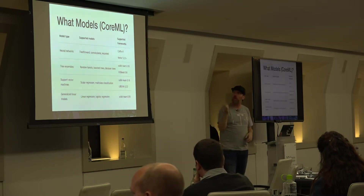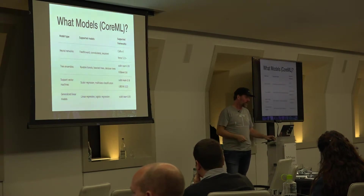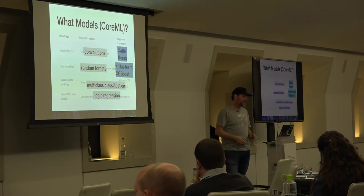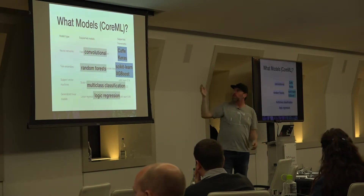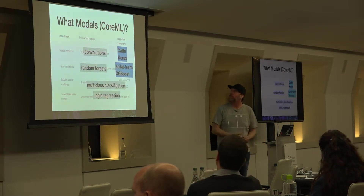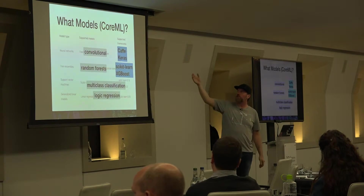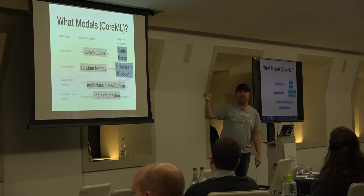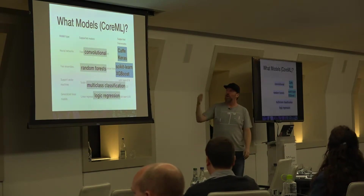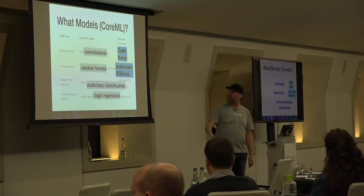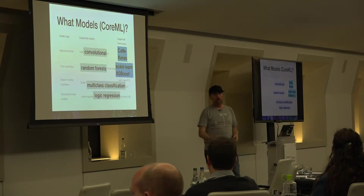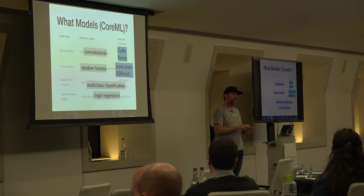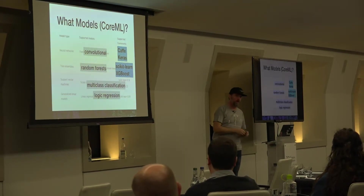This is an example for CoreML, which I'll cover next. For neural networks and convolutional models, you can use Caffe or Keras. Random forests, multi-class classification, logistic regression — all of this is possible to run on a mobile device.